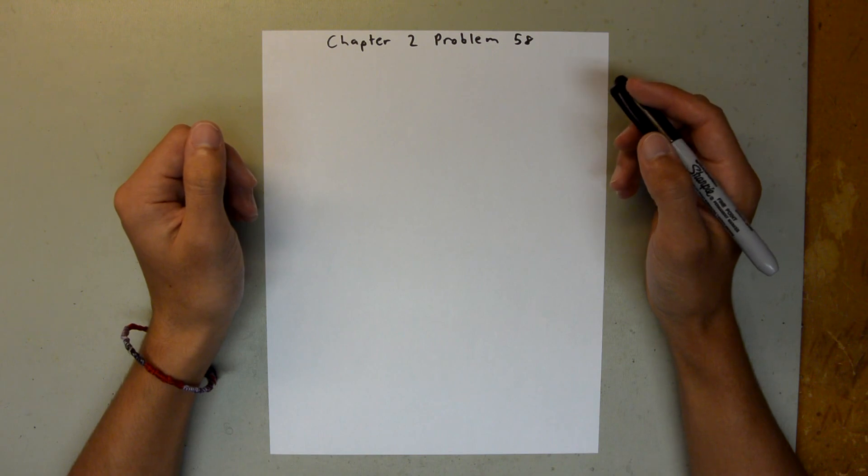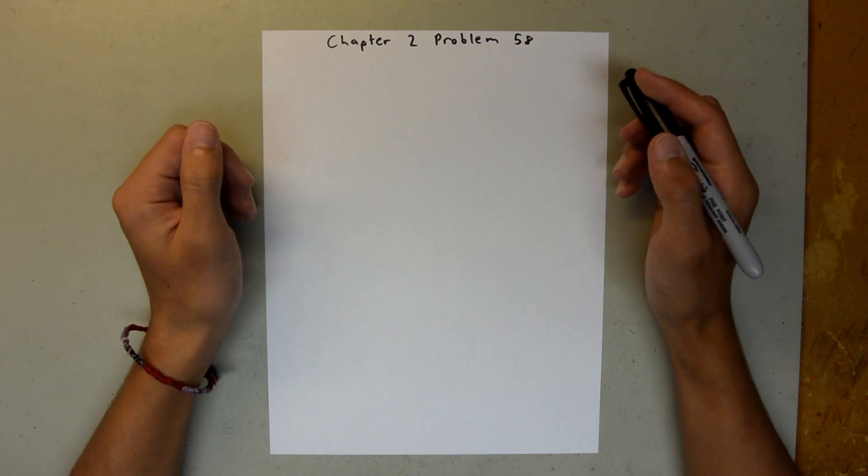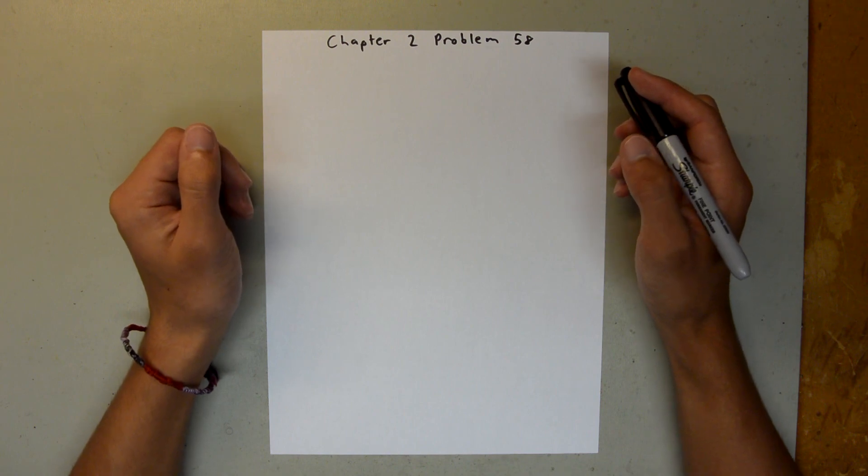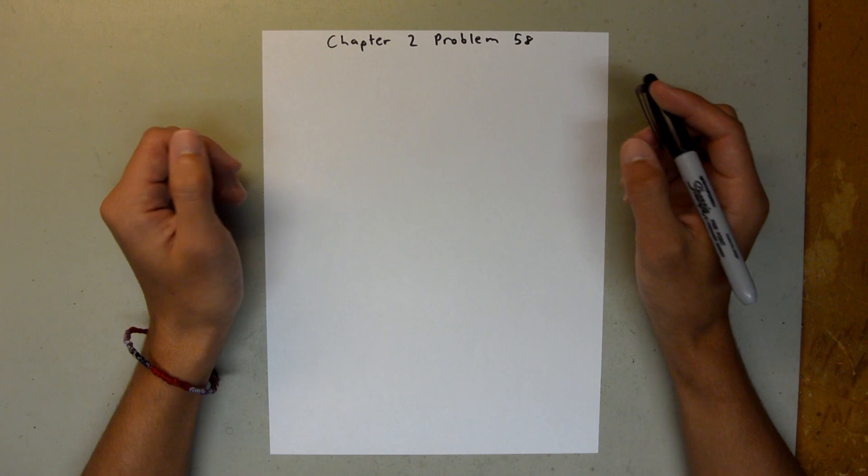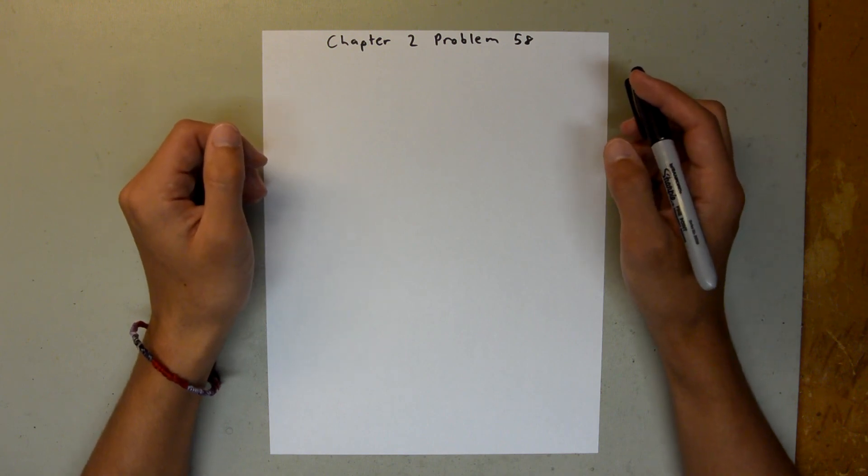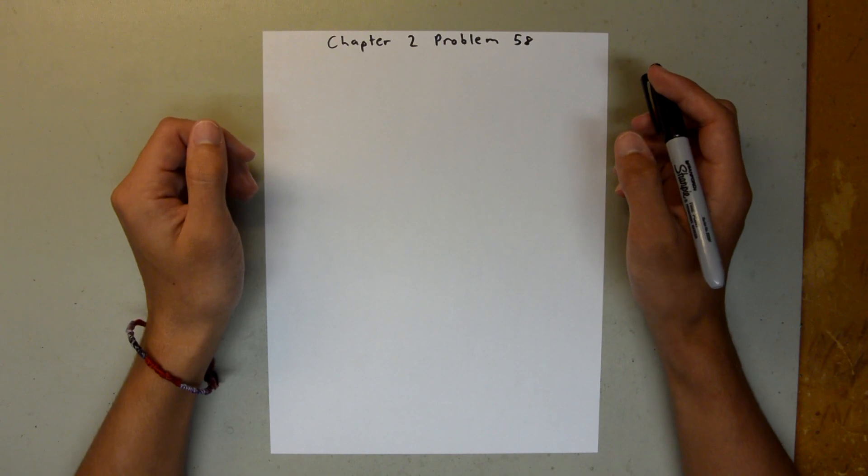I'll be doing Chapter 2, Problem 58 in the Fundamentals of Physics textbook, 8th edition by Drew Walker, Halliday, and Resnick. Chapter 2 is all about motion along a straight line, and in Problem 58, a rock is thrown upward and we are asked to find the height of a building next to where the rock is thrown.